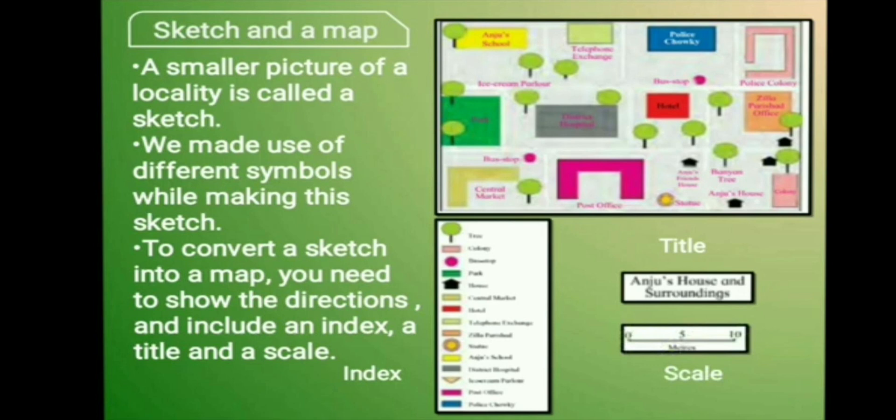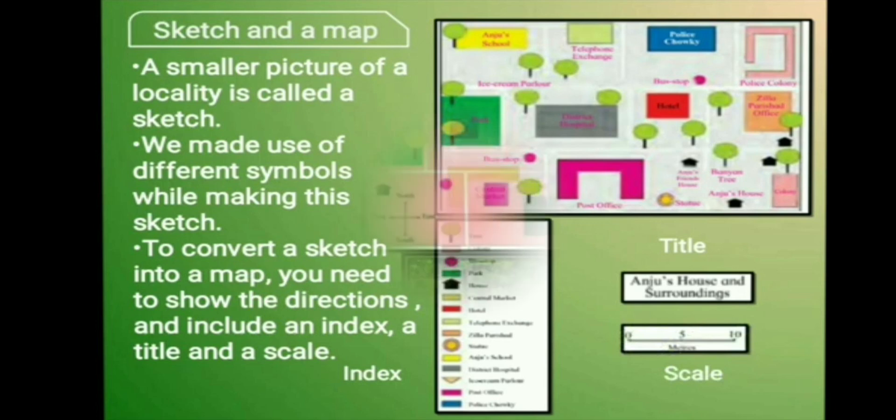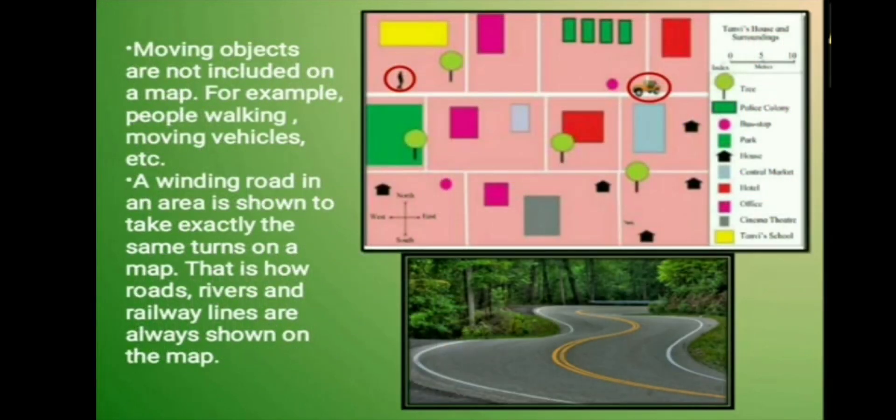We have learnt about the sketch and a map. A smaller picture of a locality is called a sketch. Then we have learnt that moving objects are not included on a map.